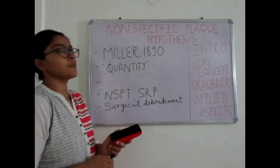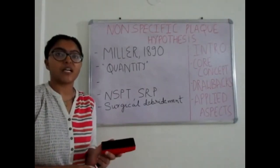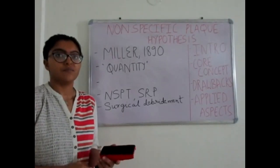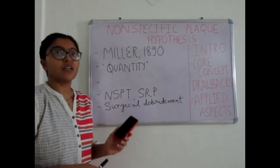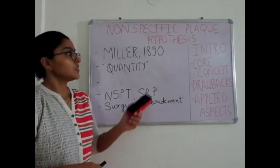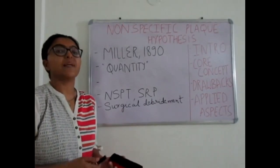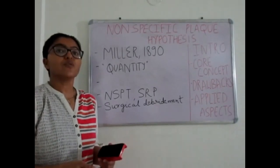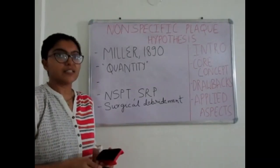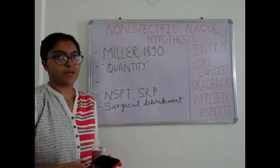A quick summary: Miller in the year 1890 gave non-specific plaque hypothesis, the core concept of which focuses on the quantity of the plaque. The applied aspects include current standard periodontal therapy, both non-surgical and surgical. Owing to drawbacks — patients who had plaque, calculus, and gingivitis but never developed periodontitis, or patients who developed periodontitis showing site specificity — the search for another hypothesis continued, giving us the specific plaque hypothesis.